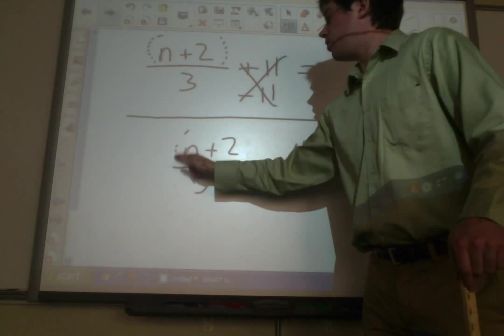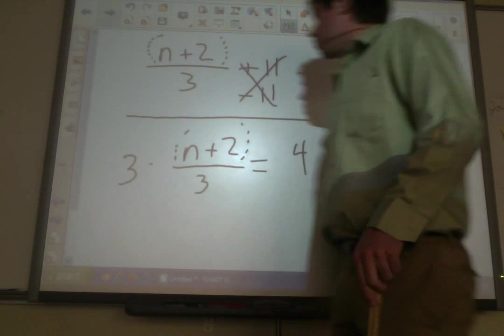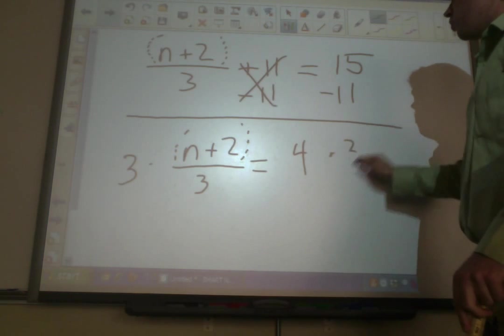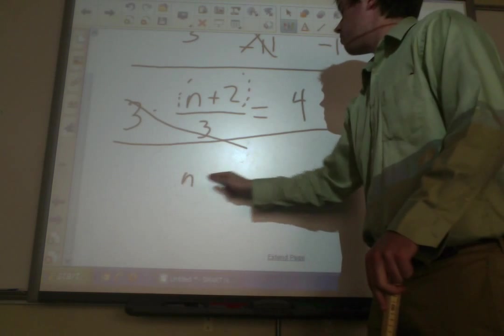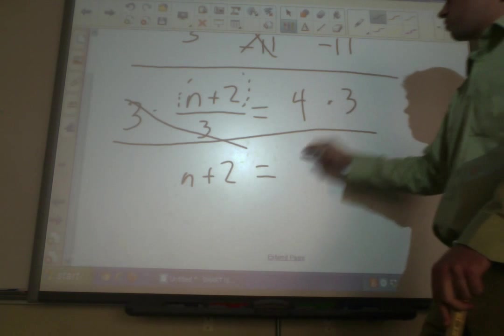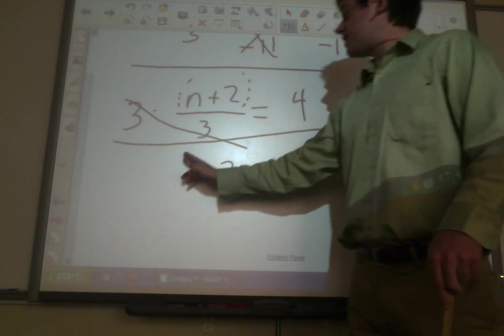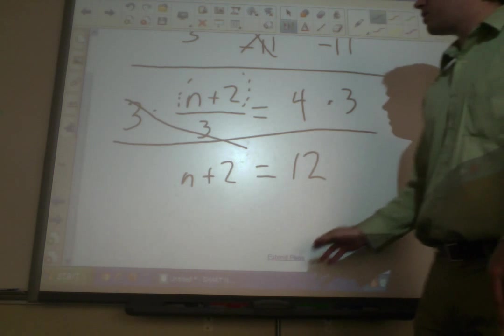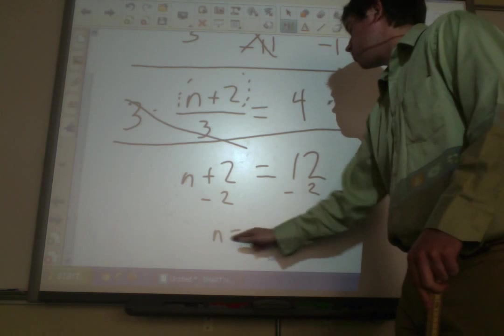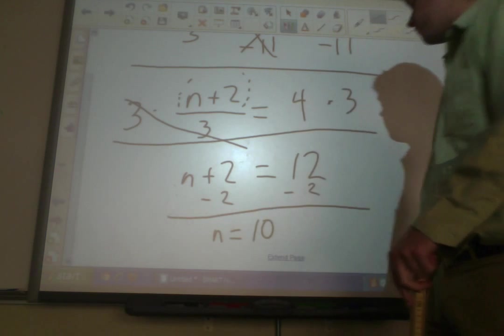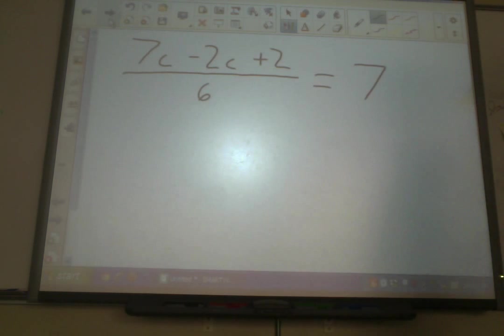We get n plus 2 over 3 equals 4. Remember, these parentheses are still around here. So, the next thing we've got to take care of is the 3. It's being divided. We need to multiply. Multiply by 3. Multiply by 3. And we get n plus 2 equals 12. Now, we finally took care of everything except the parentheses. So, we'll ignore those parentheses. We've got to get rid of the 2. Very easy. Subtract by 2. Subtract by 2. And we get n equals 10. And there we've solved another one.